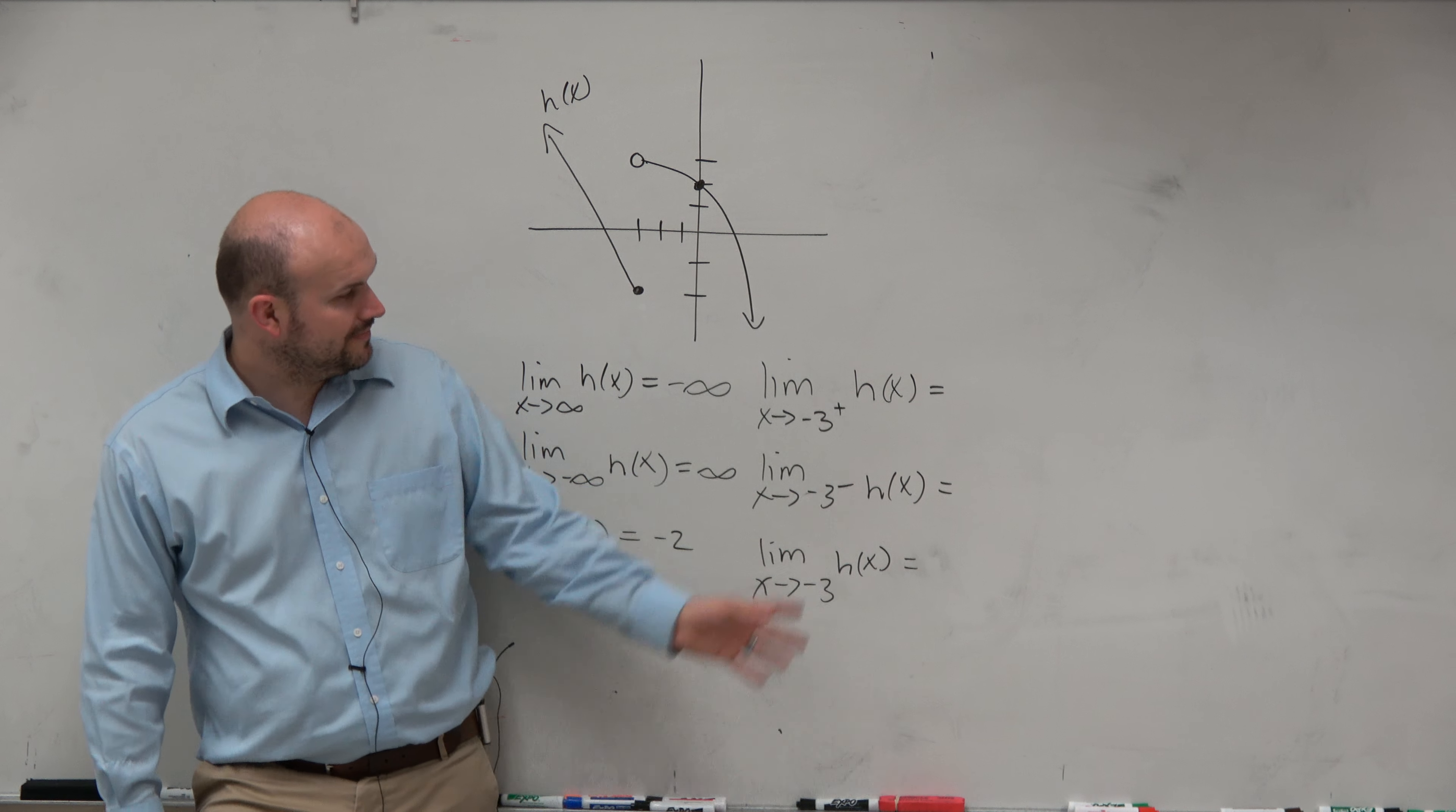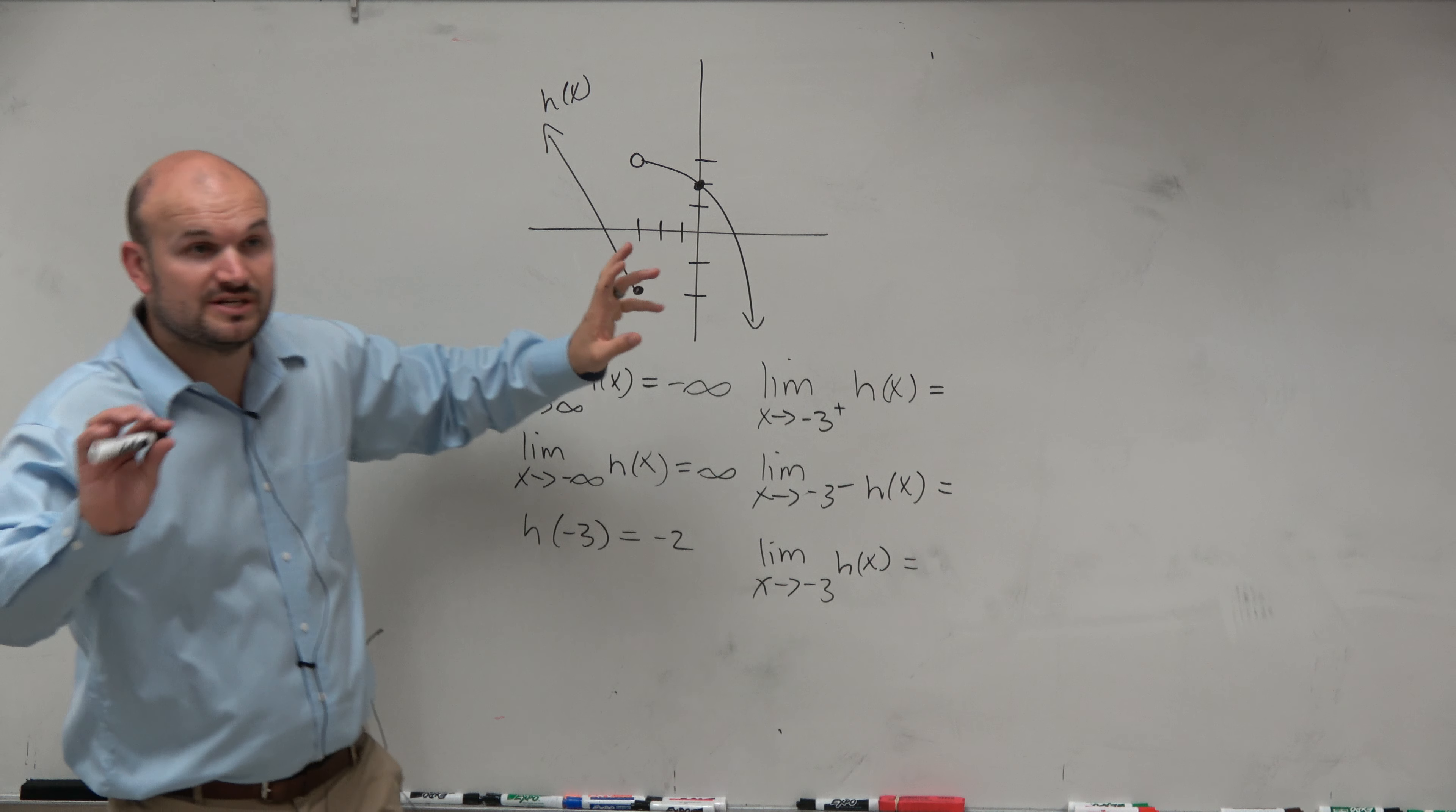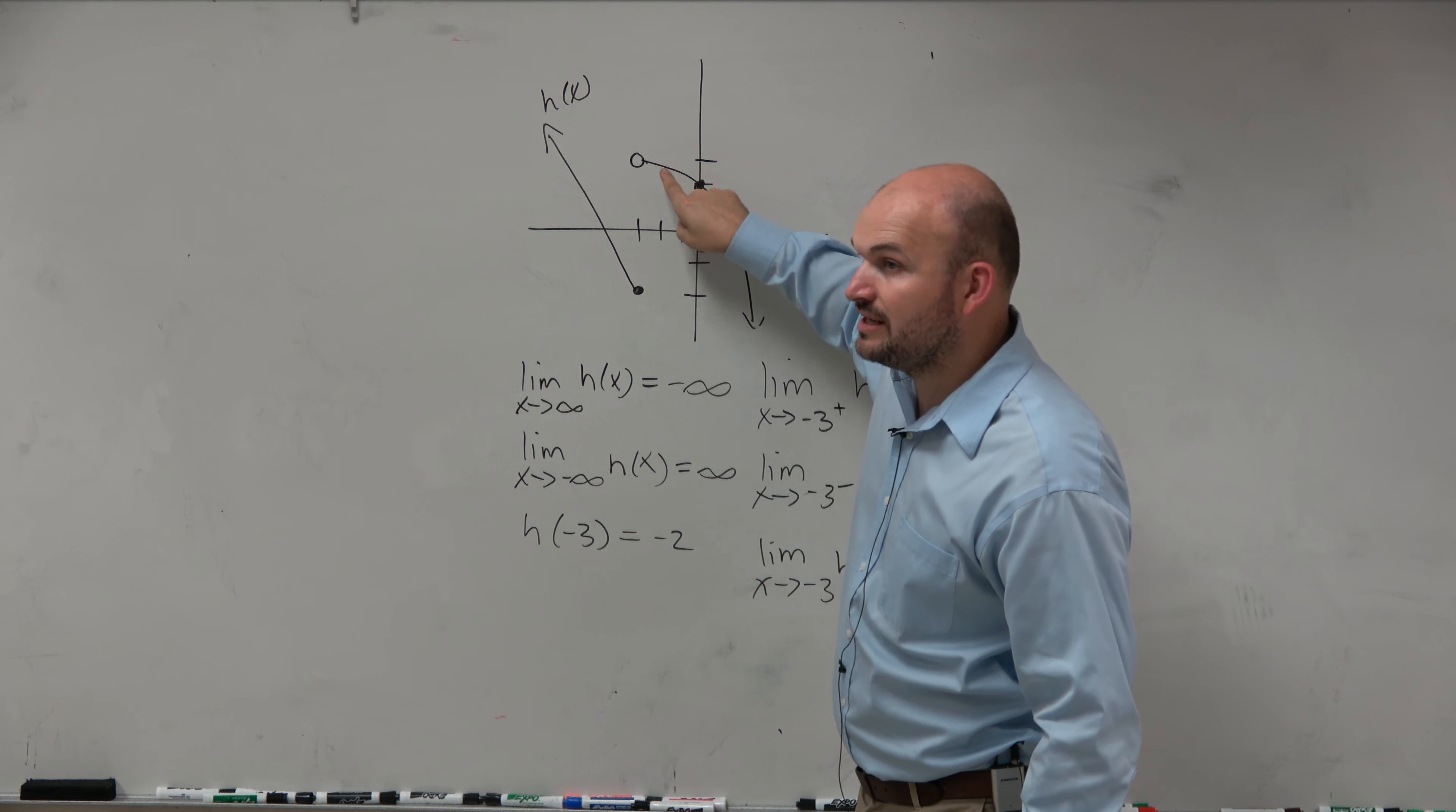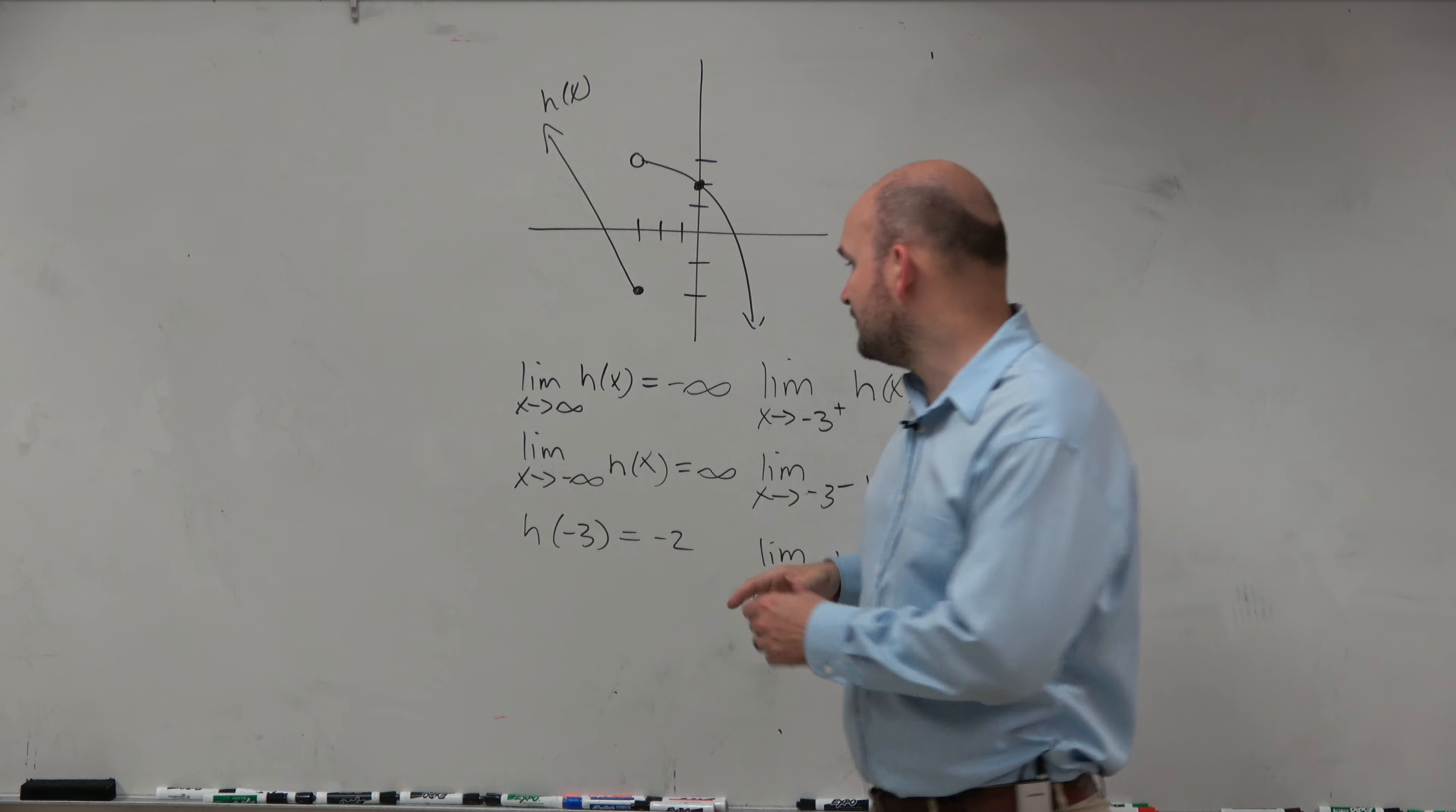So now let's get to this next point. As x approaches negative 3 from the right. So now we want to get really close to negative 3, and we're just figuring out what value are we approaching from the right. So from the right, as we're getting really close to negative 3, we're getting to the point, what value are we reaching? Positive 3.